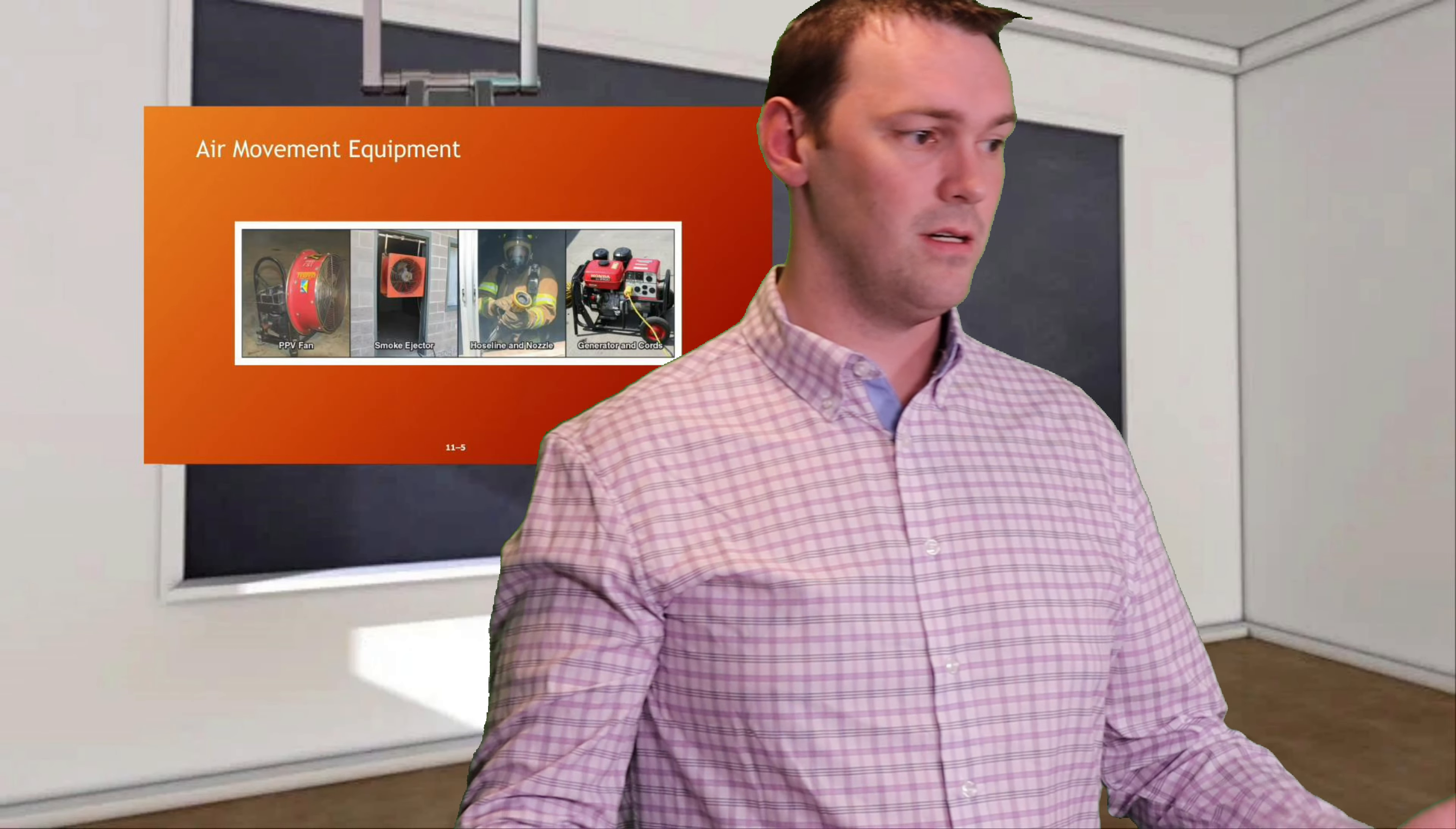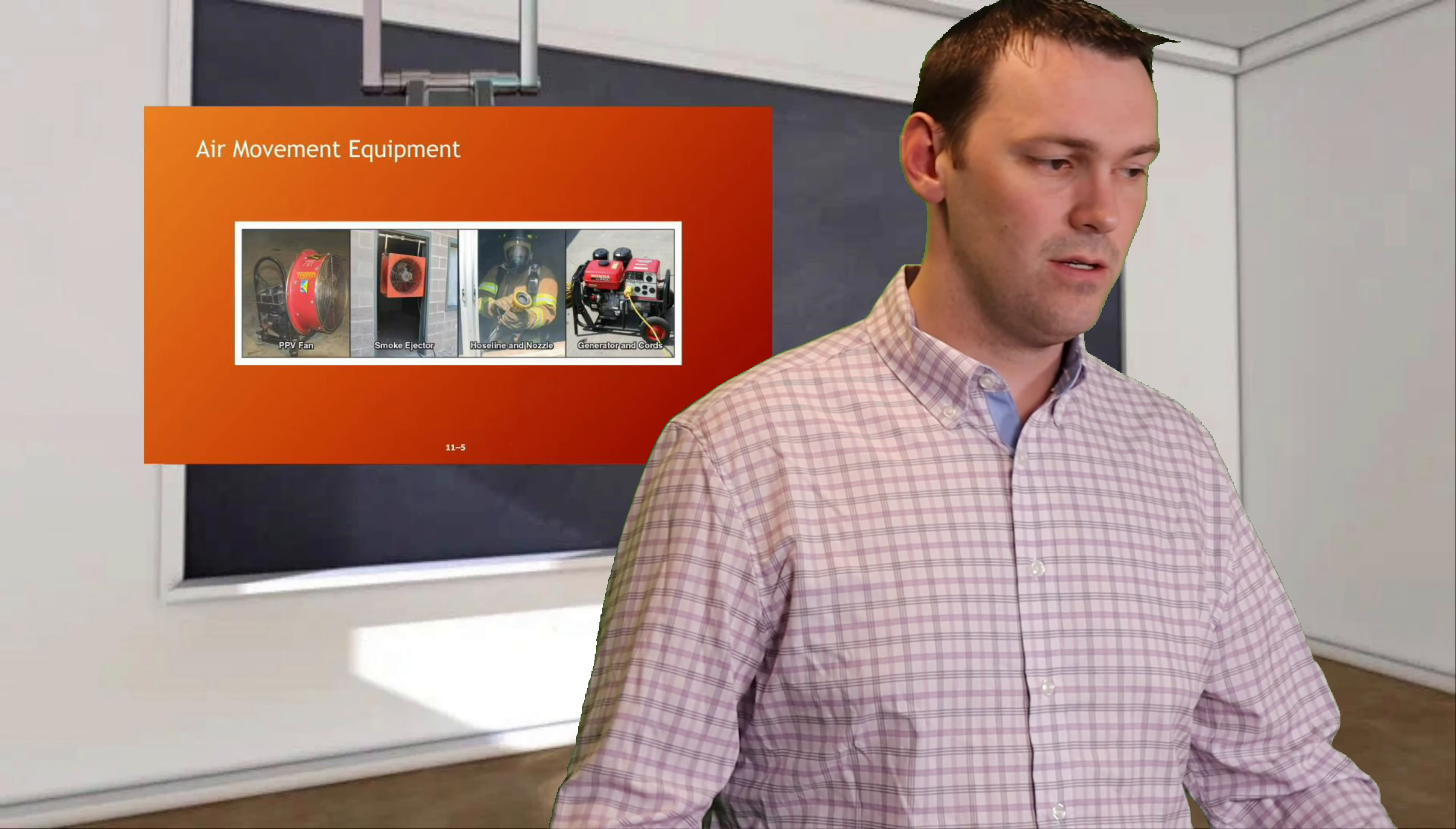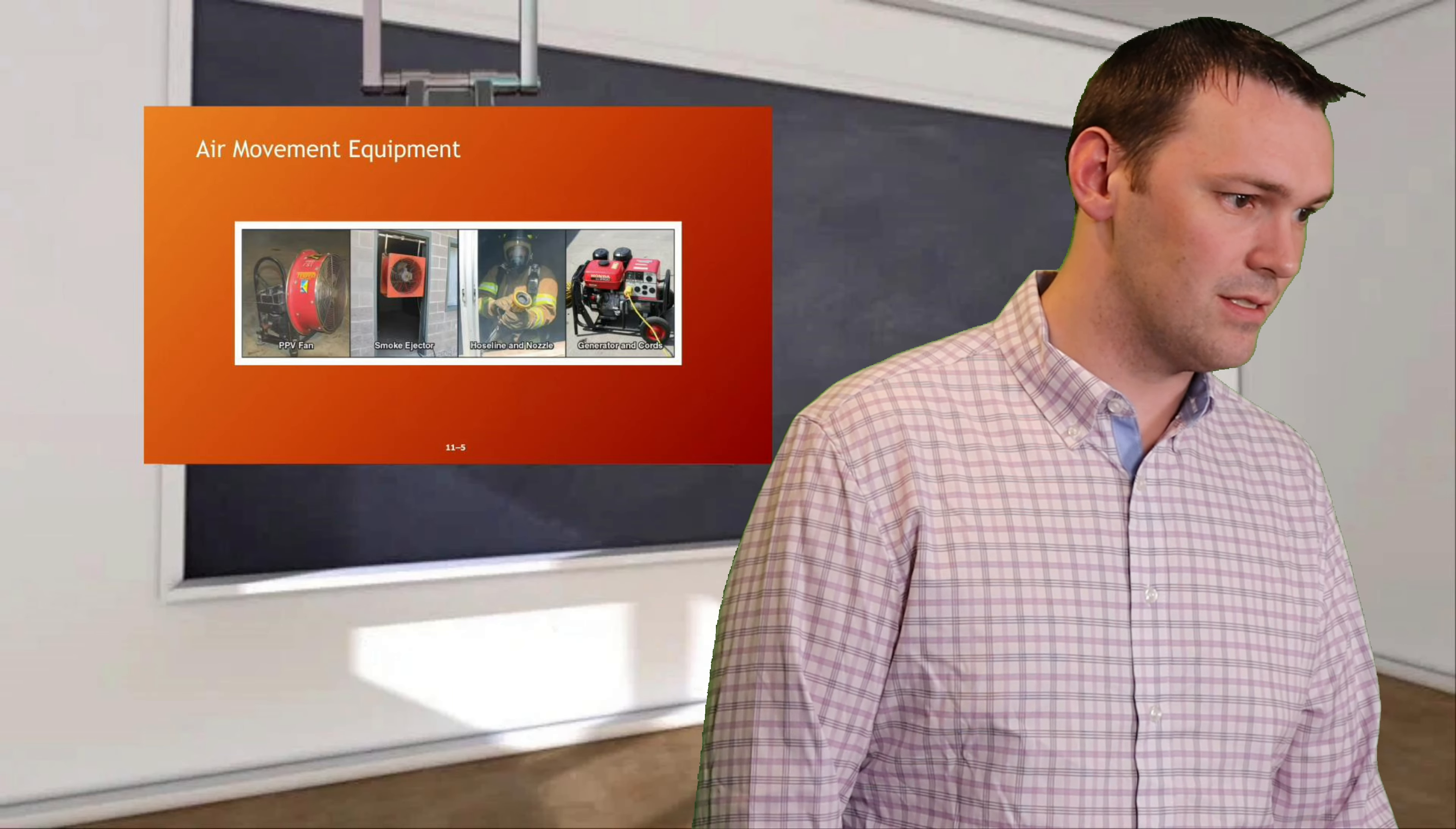Here's some pictures of airflow or air movement equipment such as a positive pressure fan or PPV fan, smoke ejector which is more like a negative pressure fan that you'd hang. Remember when you hang those, you have to put a tarp around it to cover that window or that area so you're just taking out the smoke. Hose lines and nozzles—I can open that nozzle up and you can really control that window area. There's a picture of the generator and cords. I think that we all know how to turn on a generator.